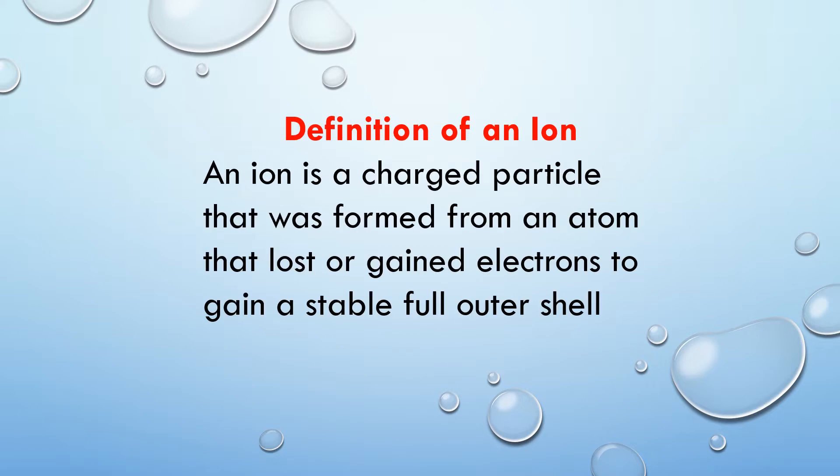So a quick clarification on what an ion is. An ion is a charged particle, that means it has a negative or positive charge. It was formed from an atom that lost or gained electrons. Now the reason it lost or gained these electrons is to gain a stable, full outer shell. That is, its valence shell is now full, so it is now stable. That's my definition of what an ion is.